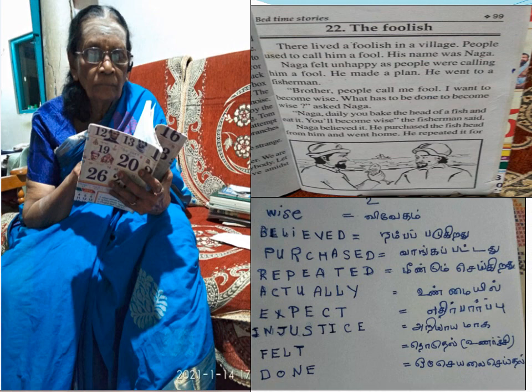The foolish Naga went to the fisherman and said, 'Brother, you are taking money for the fish head. But actually, the money you are taking is the price for the entire fish. How can you accept that amount for the fish head? This is injustice.' The fisherman smiled. 'Naga, now you may have become wise. That is why I did so.' Naga became wise thereafter.